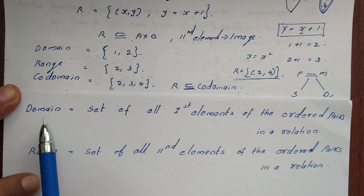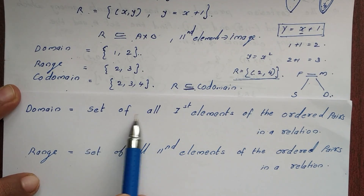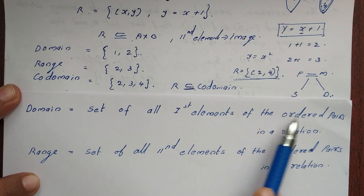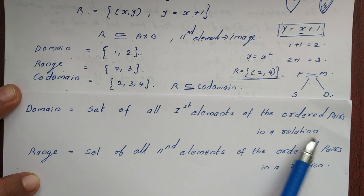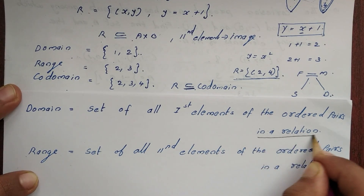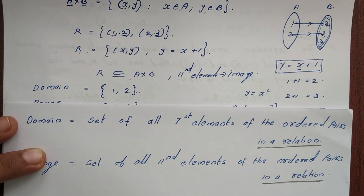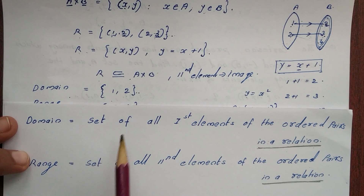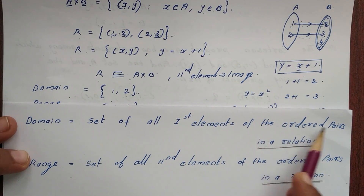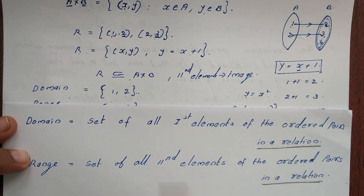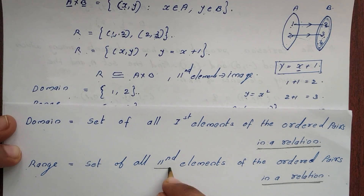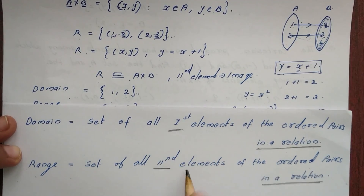Domain is defined as the set of all first elements of the ordered pairs in a relation. Range is defined as the set of all second elements of the ordered pairs in a relation.